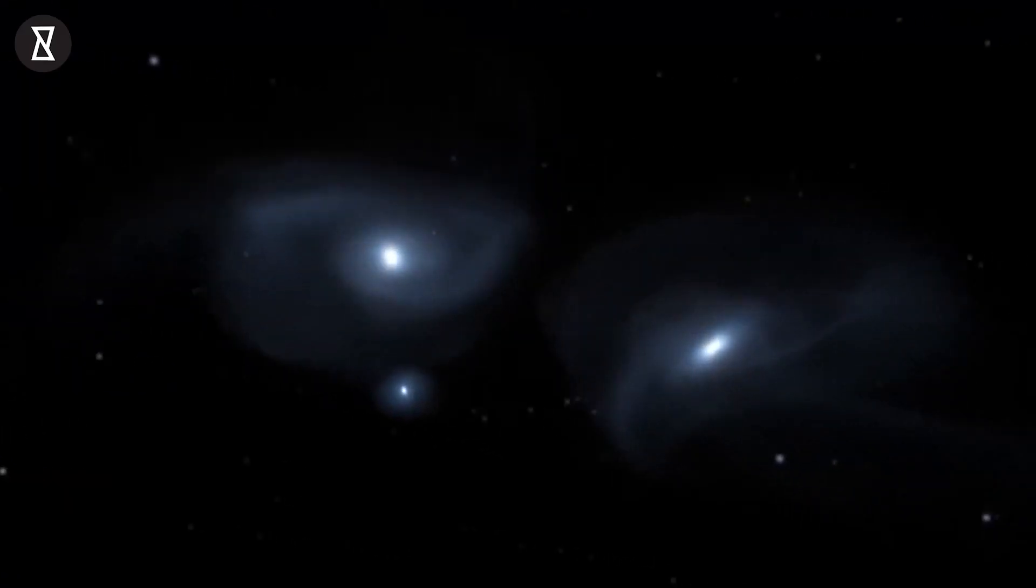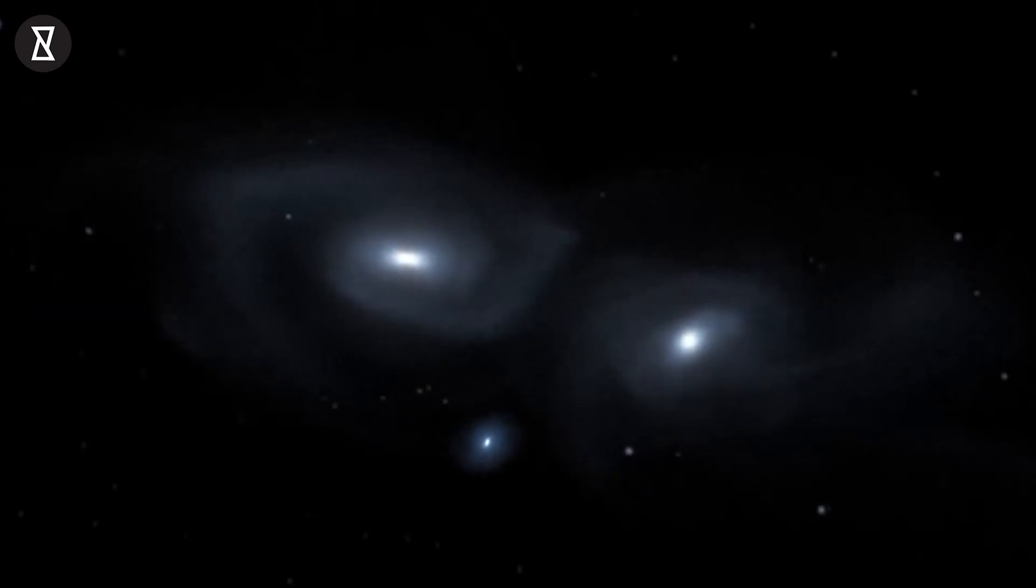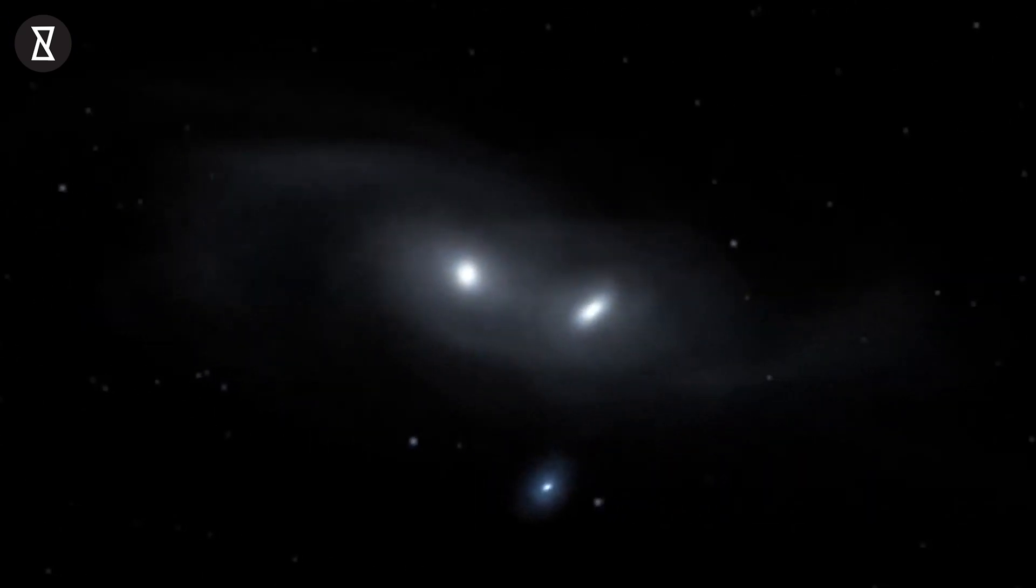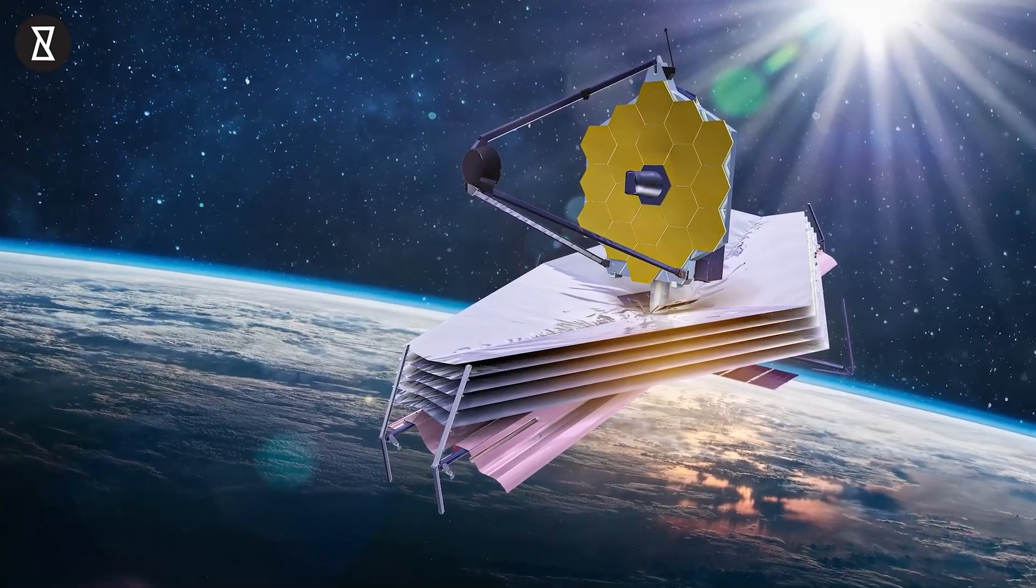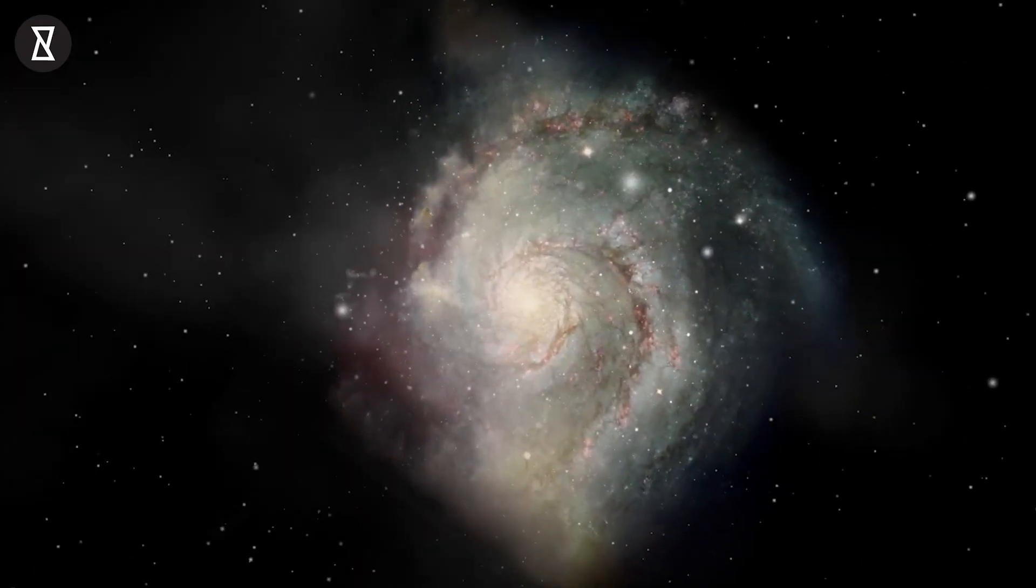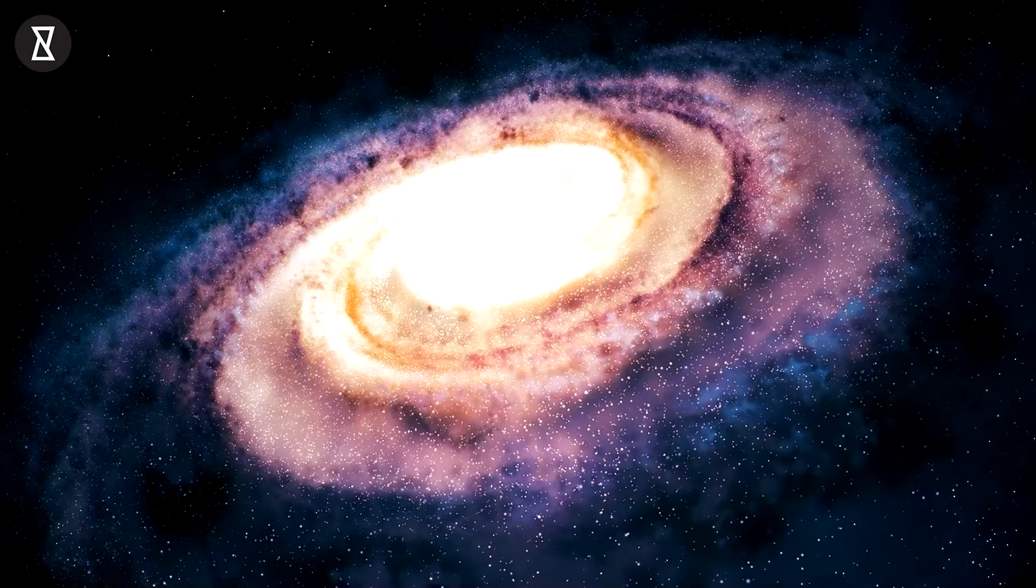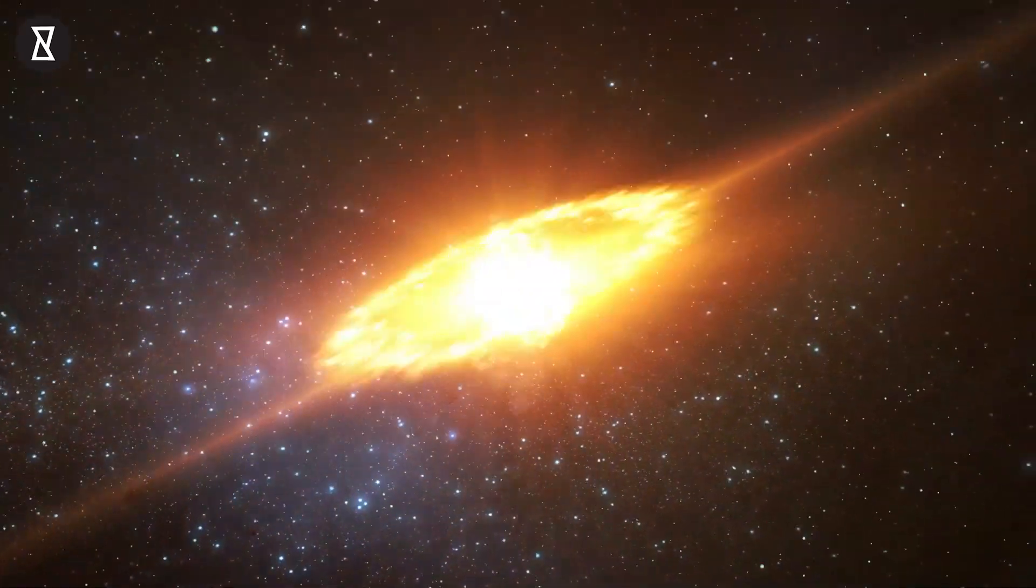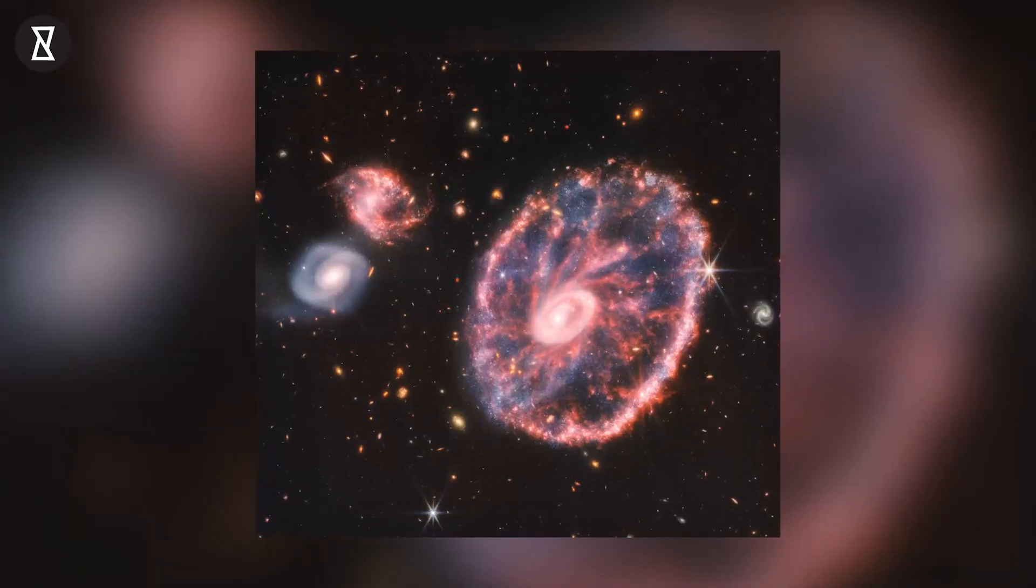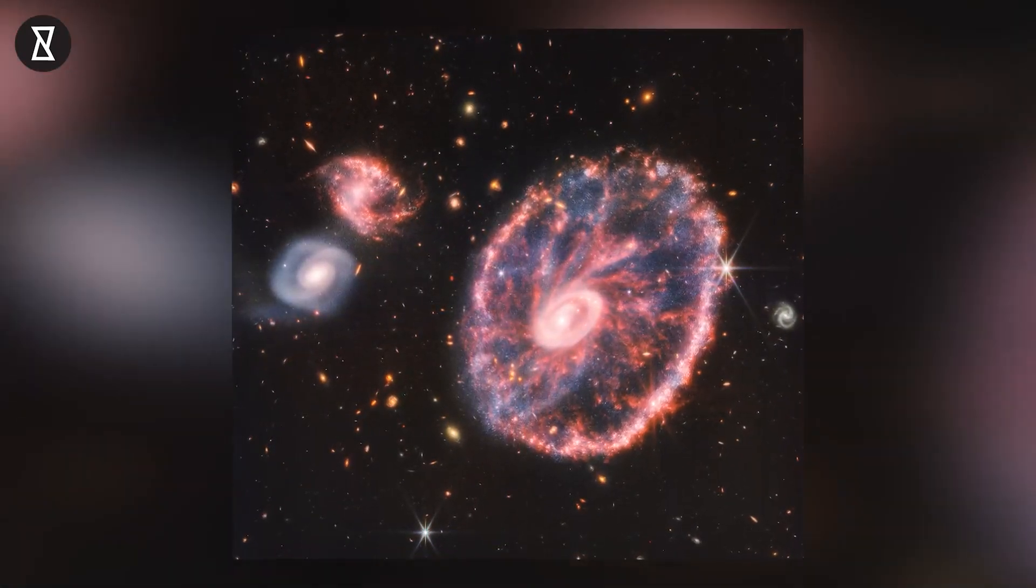Webb recently captured what would be the fate of the Milky Way and the Andromeda Galaxy in about 7 billion years. Webb peered through dust and gas to reveal star formation in a rare wheel-shaped galaxy that formed in a long-ago galactic crash. The galaxy, called the Cartwheel, for its striking resemblance to a wheel of an old-fashioned carriage,